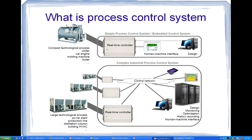A process control system is a hardware-software technology setup that performs automatic control of a technological process. At the heart of any control system is a real-time controller, which is connected to sensors, valves, dampers, or any other actuators acting and measuring a controlled technological process. On the other side, a real-time controller can be connected to some human-machine interface.